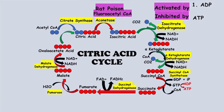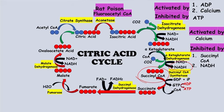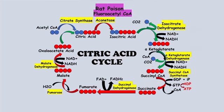Isocitrate dehydrogenase is inhibited by ATP and therefore activated by ADP. We need the citric acid cycle to generate energy, so muscles send a signal via calcium to activate the citric acid cycle to generate more energy. Alpha-ketoglutarate dehydrogenase is inhibited by its products succinyl CoA and NADH, and activated by calcium, the same way as isocitrate dehydrogenase.